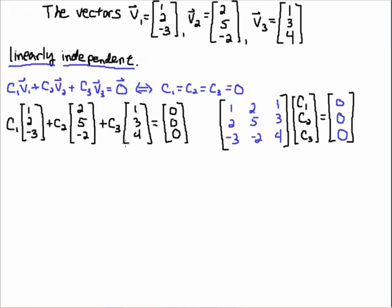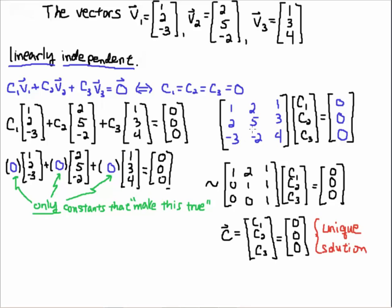Remember that this looks like matrix vector multiplication. I have C1 times the first column. So if you think about multiplying this matrix times this vector, that would be C1 times the first column plus C2 times the second column plus C3 times the third column. That is how you do matrix vector multiplication. So I've taken this linear combination, written it as a linear system equal to the zero vector. Now I row reduce this system and I get this matrix in echelon form.